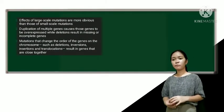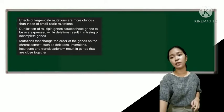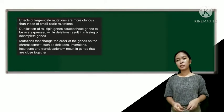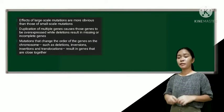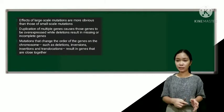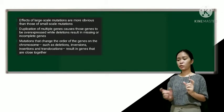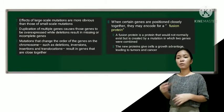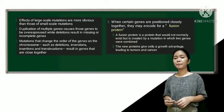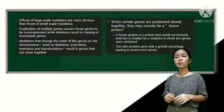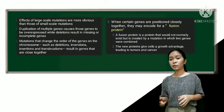And also we have the effects of large-scale mutations. So these are more obvious than those of small-scale mutations because the duplication of multiple genes causes those genes to be overexpressed, while deletions result in missing or incomplete genes. So mutations can change the order of the genes on the chromosome, such as the deletion, inversion, insertion, and translocation. This results in genes positioned close together that were previously separated, either by a set of genes on the same chromosome or on another chromosome altogether. So when certain genes are positioned close together, they may encode for what we call a fusion protein, which is a protein that would not normally exist but is created by a mutation in which two genes were combined. So some of these proteins give cells a growth advantage that leads to tumors or worse, cancer.